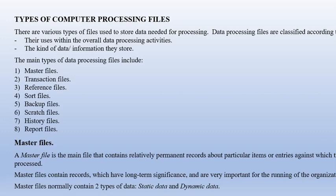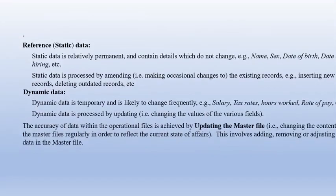A master file is the main file that contains permanent records about particular items or entries against which transactions are processed. Master files contain records which have long-term significance and are very important for the running of the organization. Master files normally contain two types of data: static data and dynamic data.